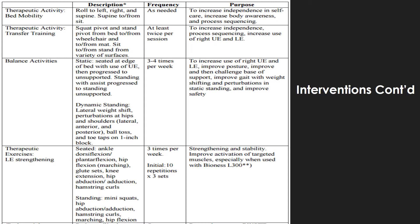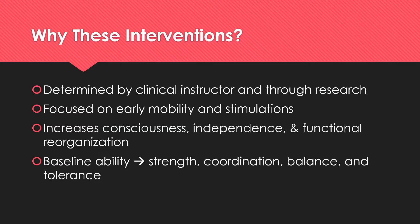As you look to your left, you can see some of the interventions discussed in the previous slide in more detail. For example, you can see the patient worked on static and dynamic balance activities, with the activity, frequency, and reason for the exercises explained. Many of these interventions were determined by the clinical instructor but have also been supported through research and clinical practice. Initial interventions focused on early mobility, stimulation, and use of the hemiparetic side, as research has shown this increases levels of consciousness, independence, and functional reorganization.